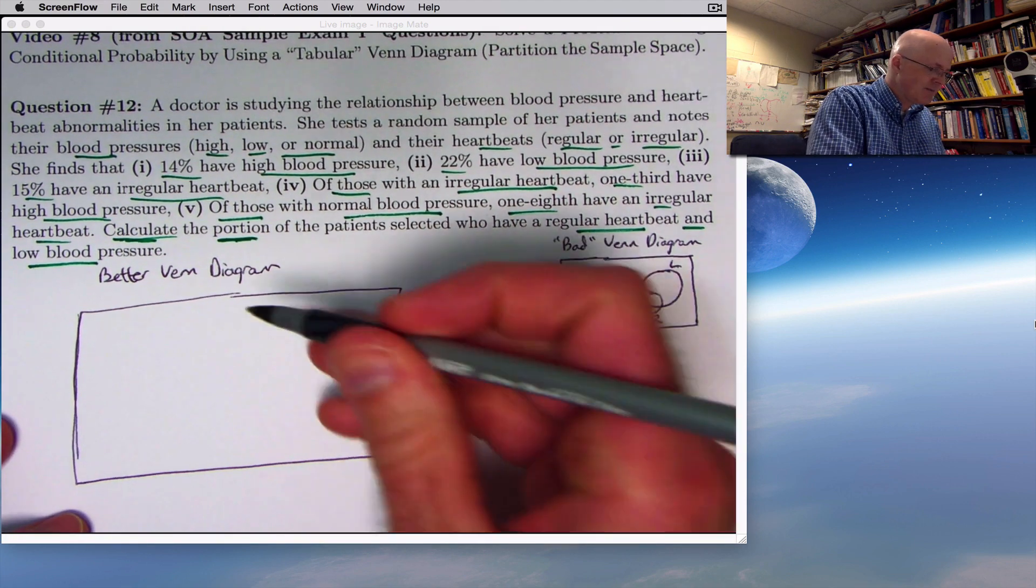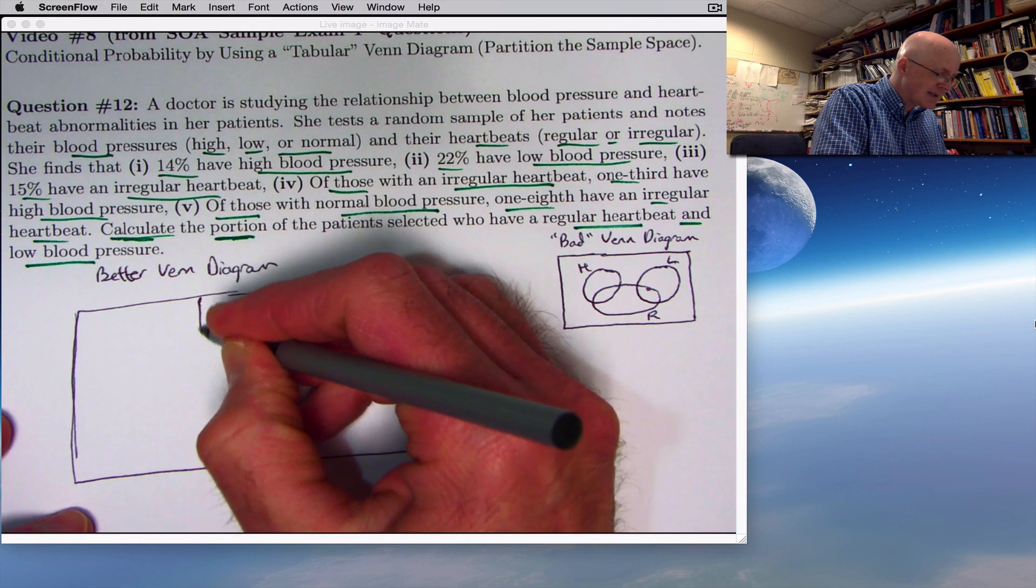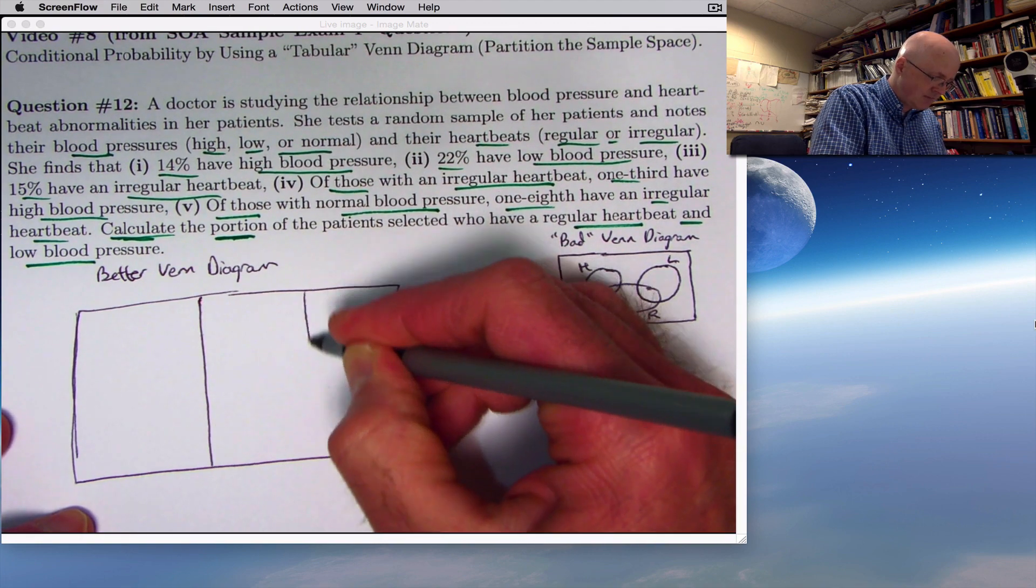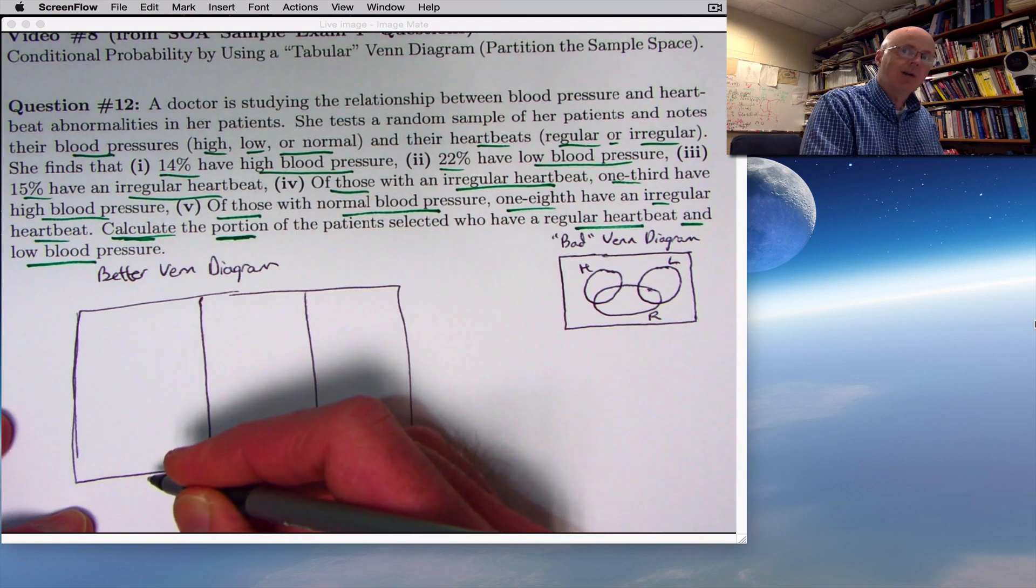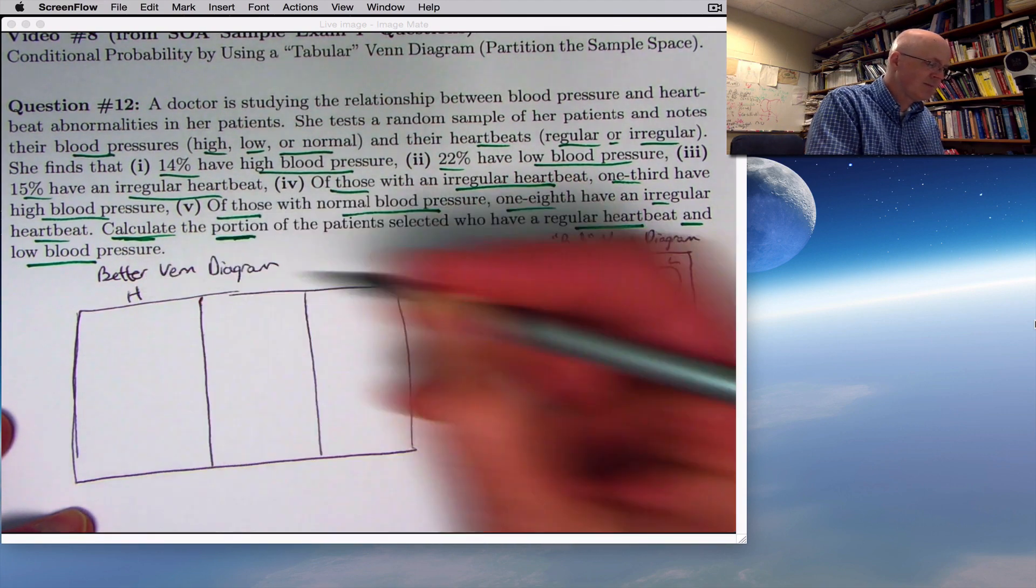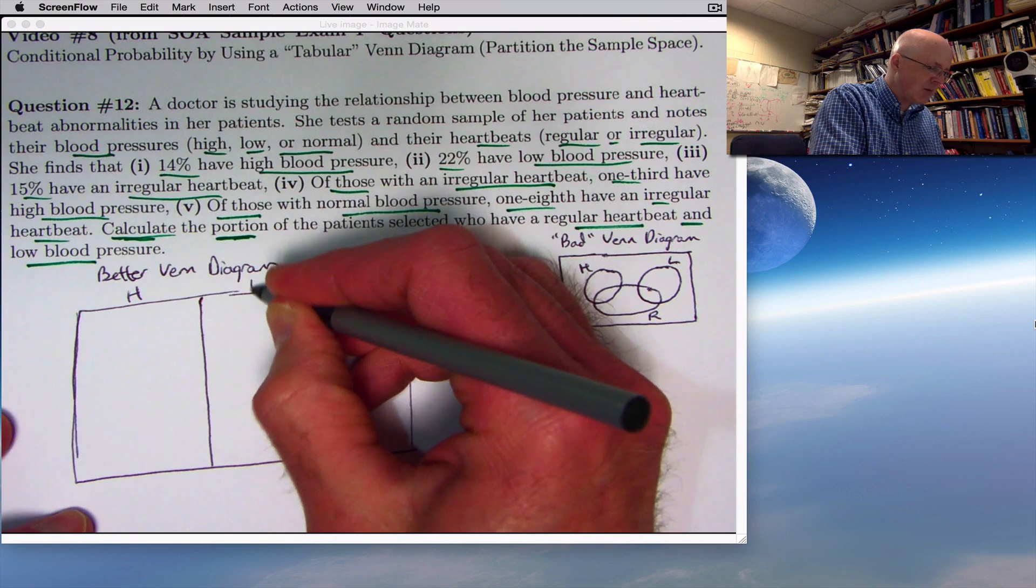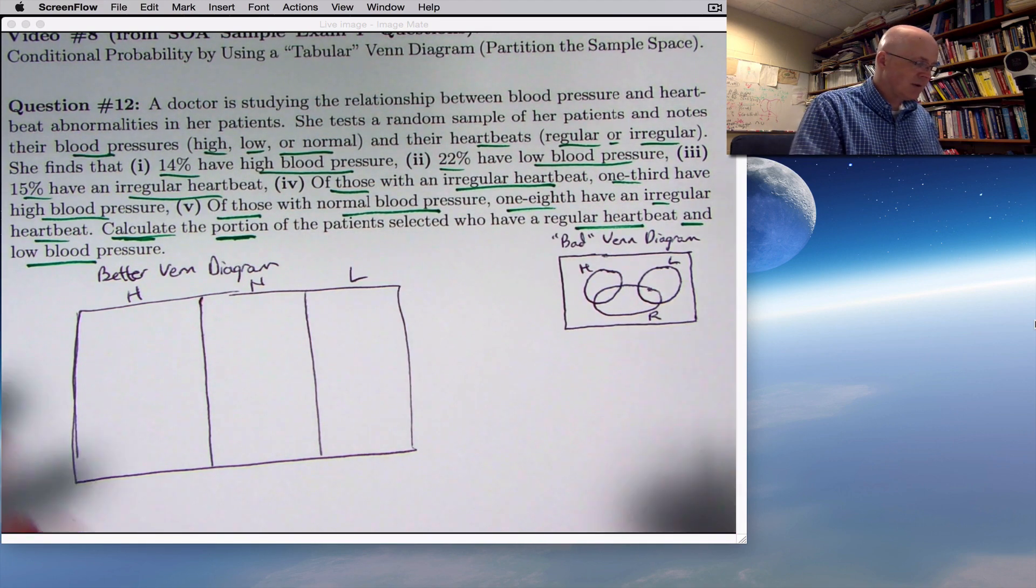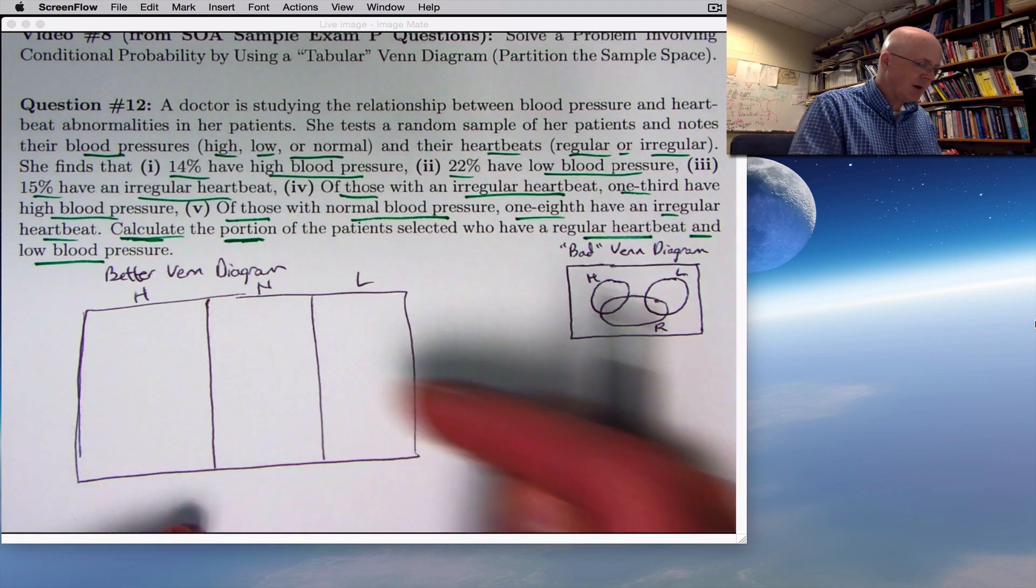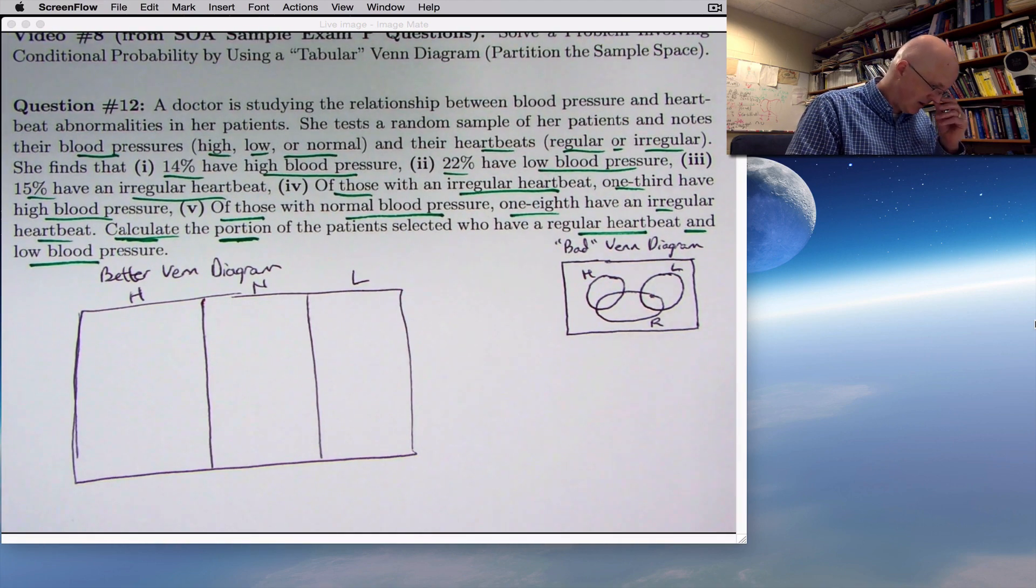Because of that, it might be best to actually draw them as rectangles in the Venn diagram. Think of this rectangle, this column of the table, as representing high blood pressure. This one is representing normal, and this one is representing low. So those are, again, no overlap there. Disjoint, mutually exclusive, those are all names for the same thing.